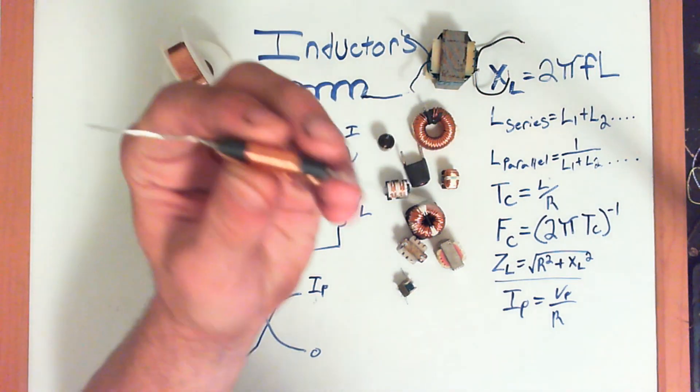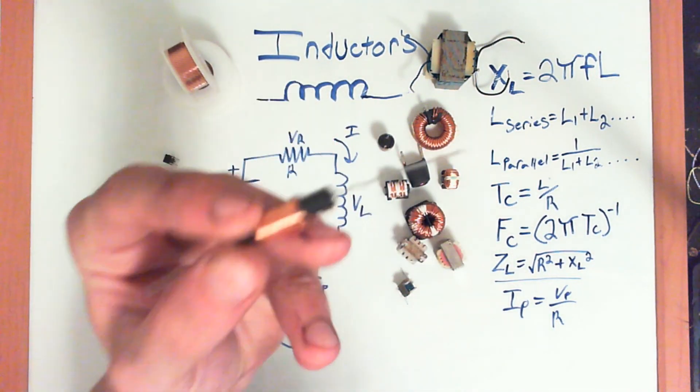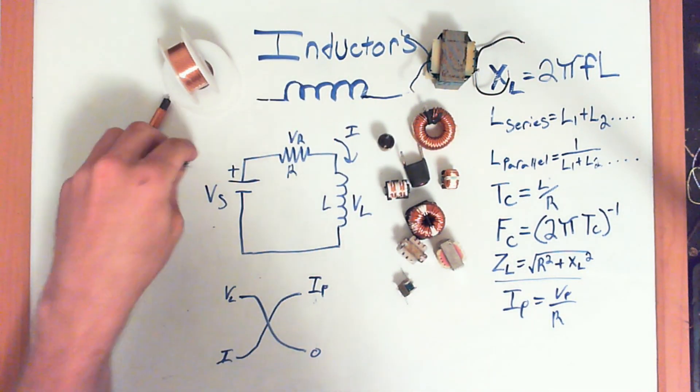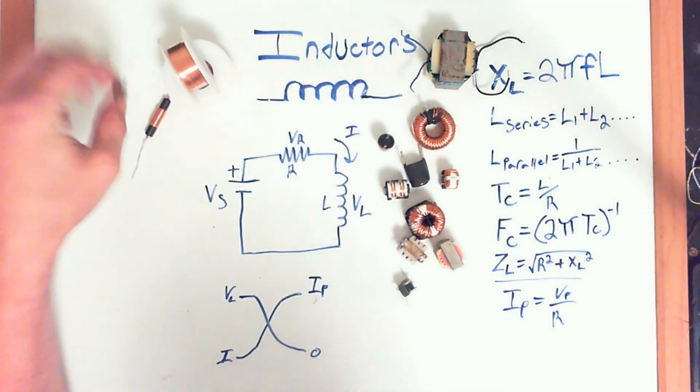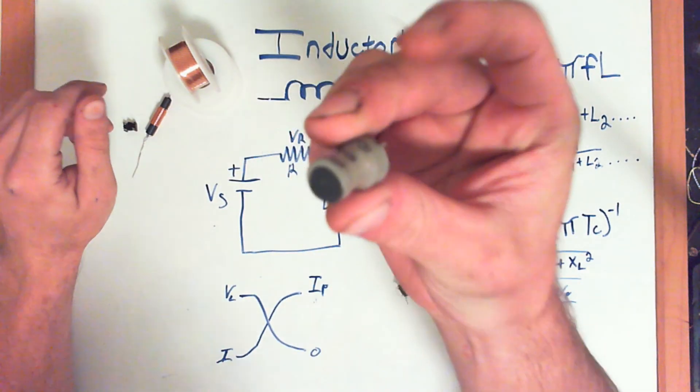Inductors come in all different shapes and sizes. This is a choke, an RF choke. They can be really tiny, be a little bigger.